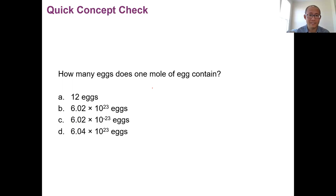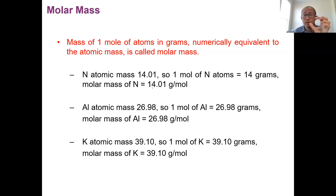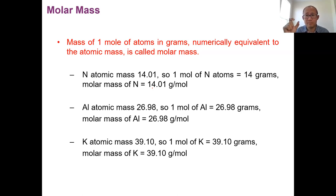Because of that definition — one mole defined from 12 grams of carbon-12 — we have a very useful conversion: the mass of one mole of any atom in grams will numerically equal its atomic mass. Carbon-12 has atomic mass 12, and one mole is 12 grams. So if you know the atomic mass of something, one mole of it in grams will numerically equal that atomic mass.